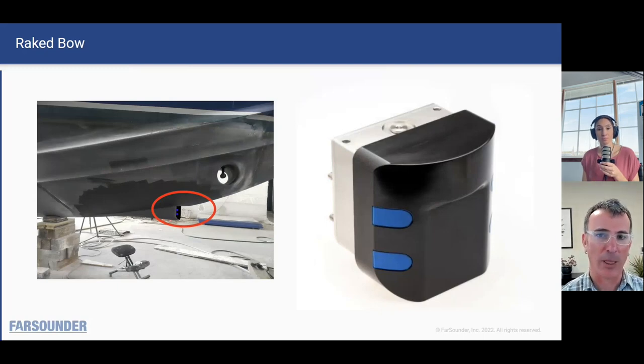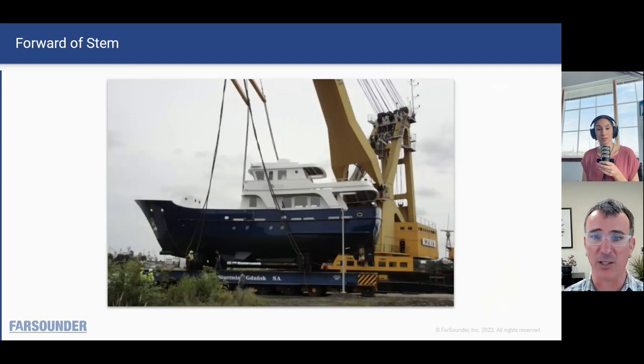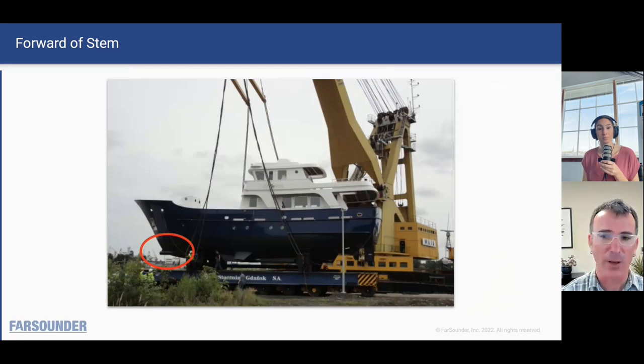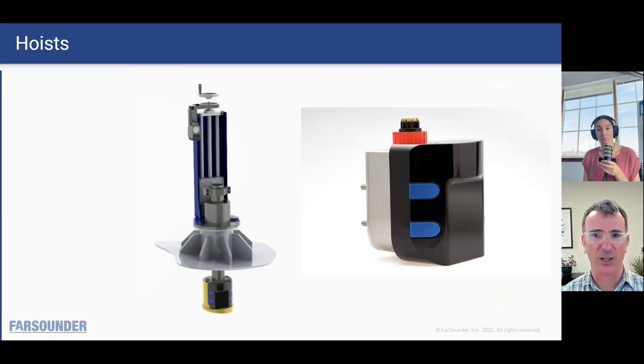We provide installation design drawings and review services to help our customers figure out the best way to install it. Most of the time it is a fixed installation, but we do have some customers that prefer to install it on a hoist. And in those cases, if you have a sea chest already on the vessel, you can add a hoist mechanism to basically install the Argos 350 through the hull on the hoist and then retract it when you don't want to use it.